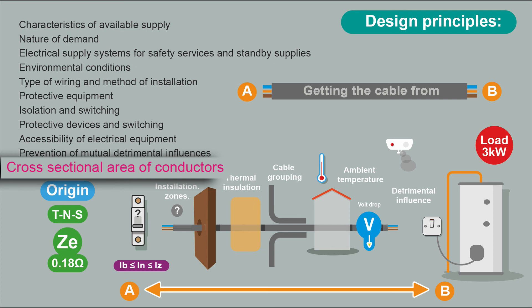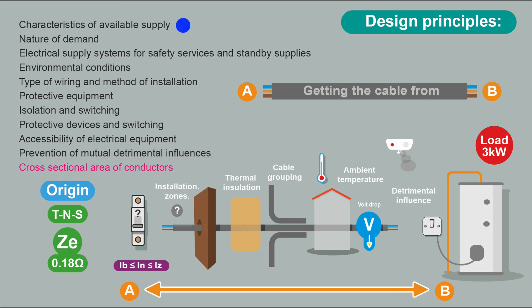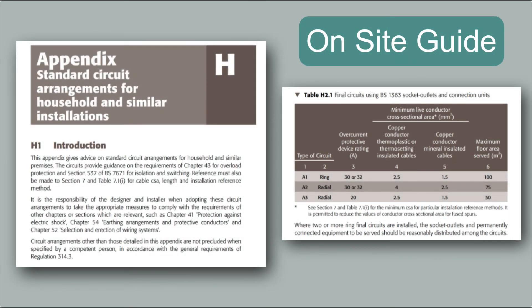This is quite a simple circuit, so there aren't too many considerations. Now we need to work out the cable size. We've been through our design principles — the supply, nature of the demand, safety services, environmental conditions, type of wiring and methods of installation, protective equipment, isolation and switching, protective devices, accessibility, and prevention of mutual detrimental influences — and we are ready to start designing the cable. Appendix H of the On-Site Guide gives details of standard circuit arrangements for households and can help simplify the design process.